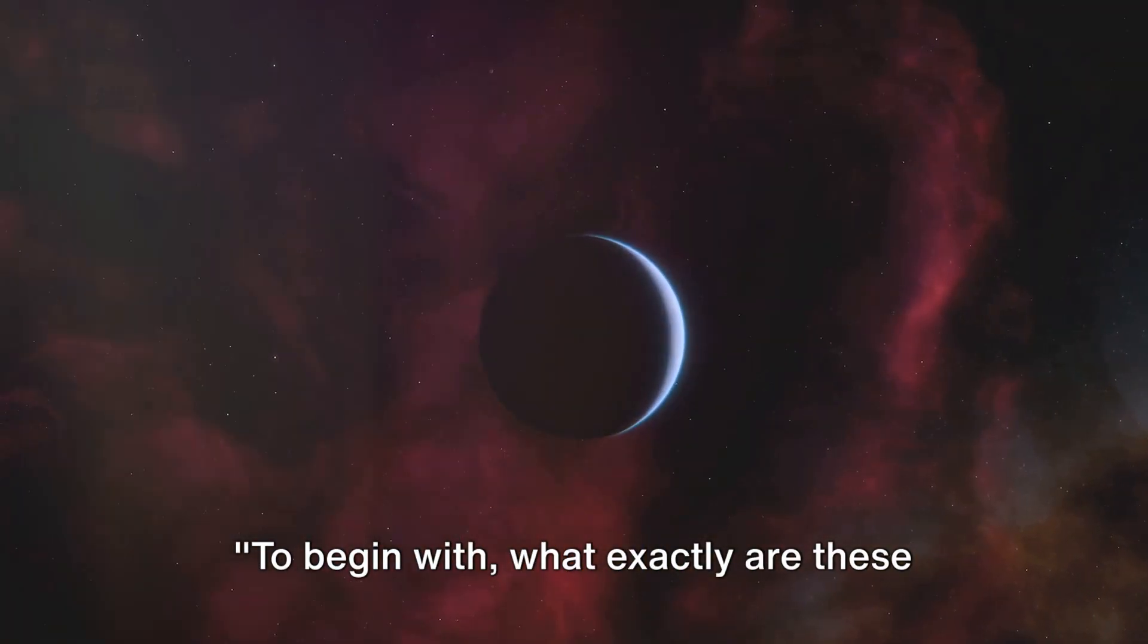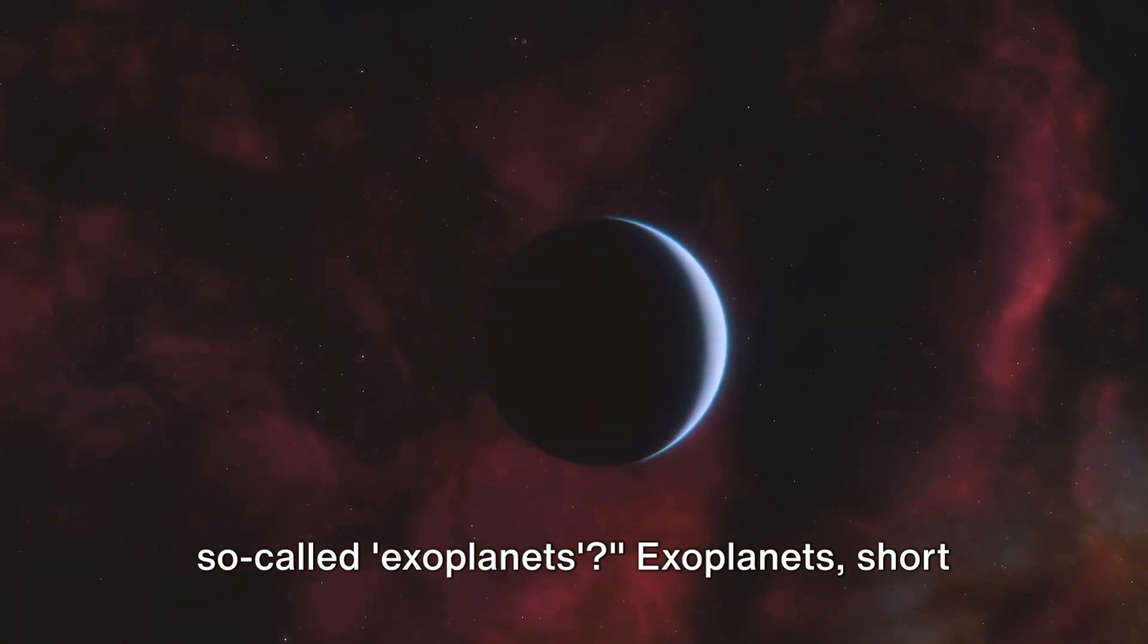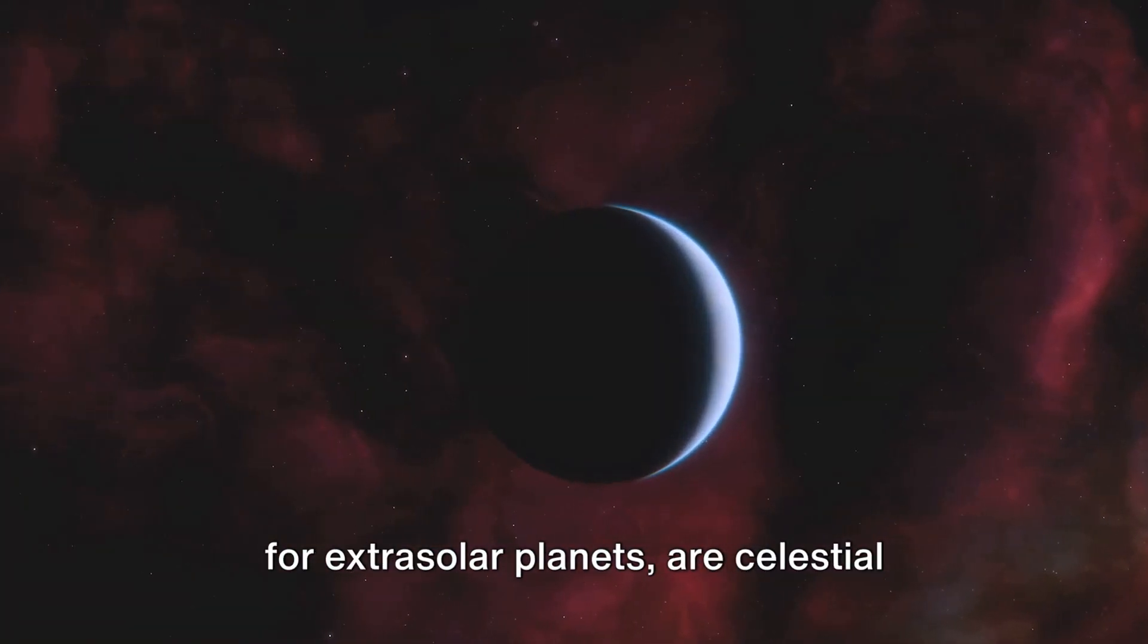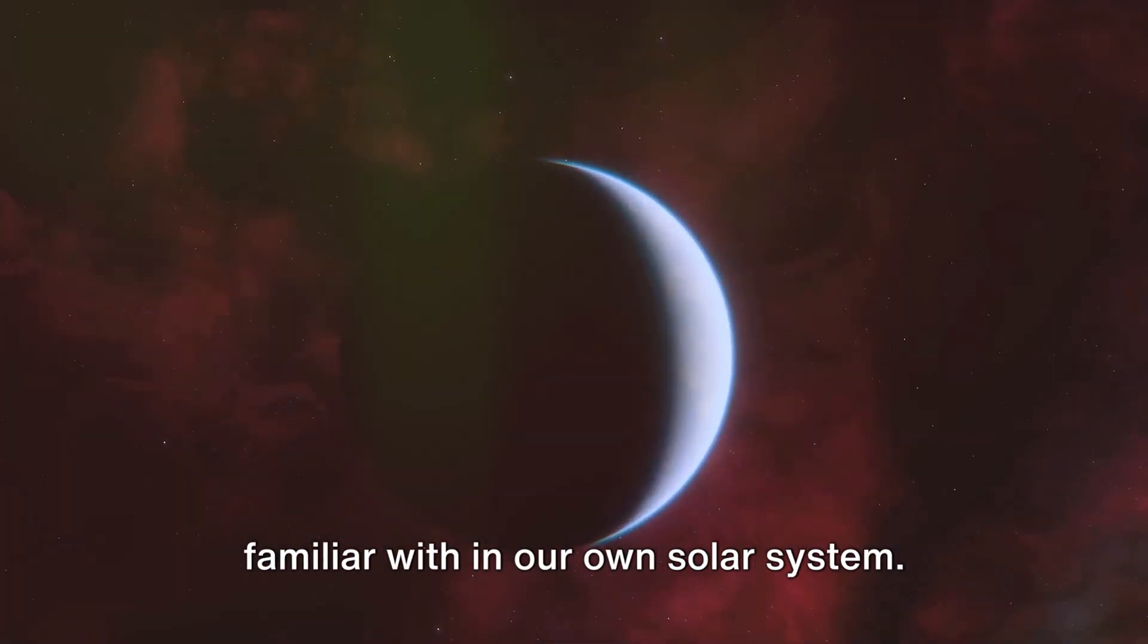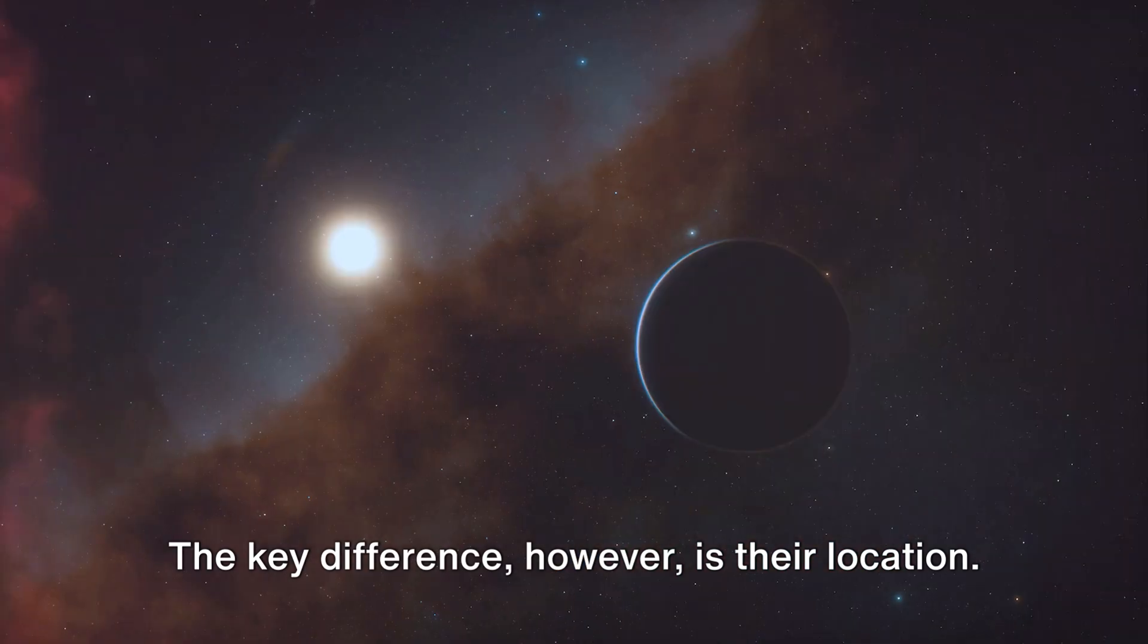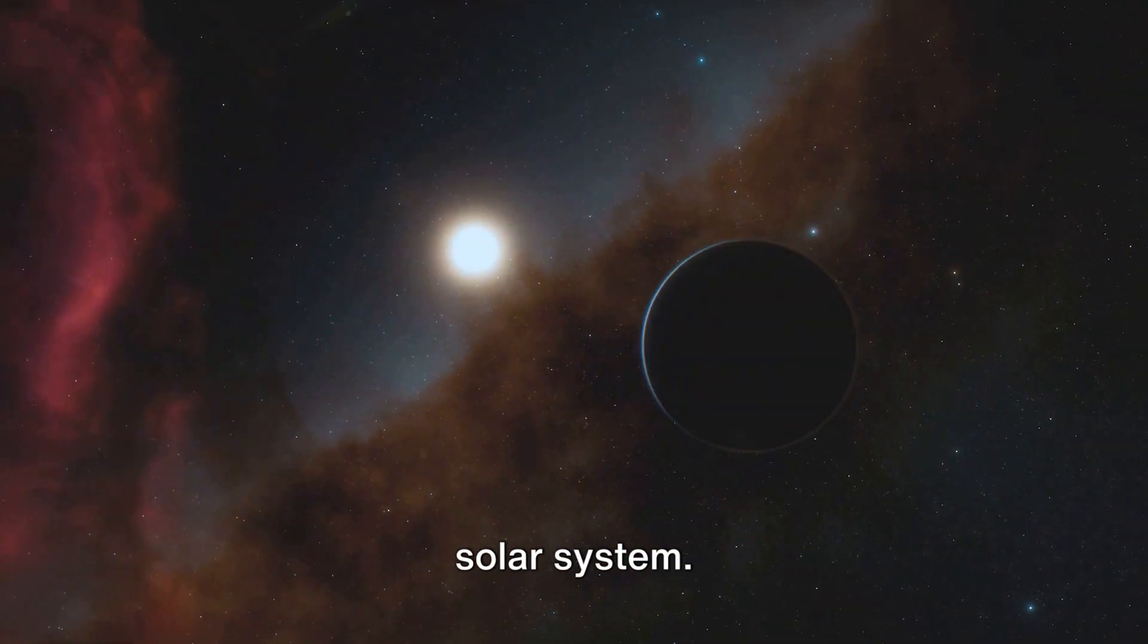To begin with, what exactly are these so-called exoplanets? Exoplanets, short for extrasolar planets, are celestial bodies, just like the planets we're familiar with in our own solar system. The key difference, however, is their location. Exoplanets orbit stars outside of our solar system.